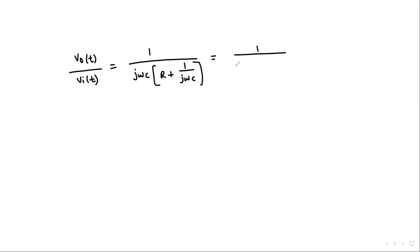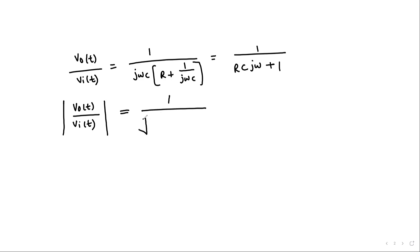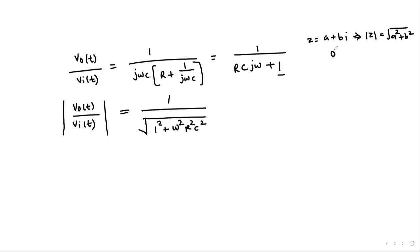V0(t) divided by Vi(t) equals 1 over jωC divided by R plus 1 over jωC, which simplifies to 1 over (RCjω + 1). Once that is obtained, we can find the magnitude and phase. The magnitude comes out to be 1 over the square root of 1 squared plus ω²R²C². In general, for a complex number A + Bj, the magnitude is the square root of A² + B², and the phase φ is tan inverse of B over A.